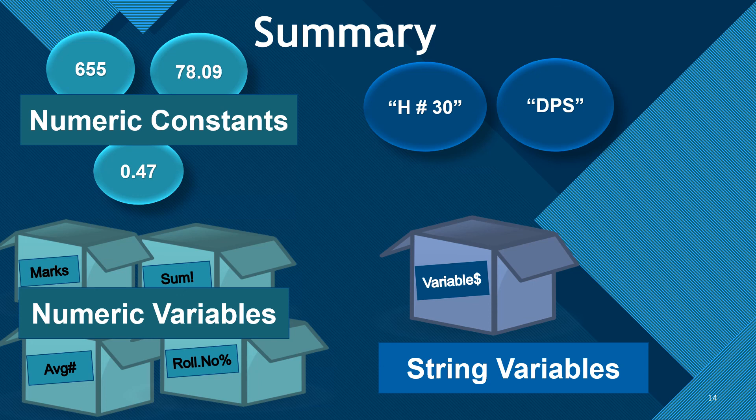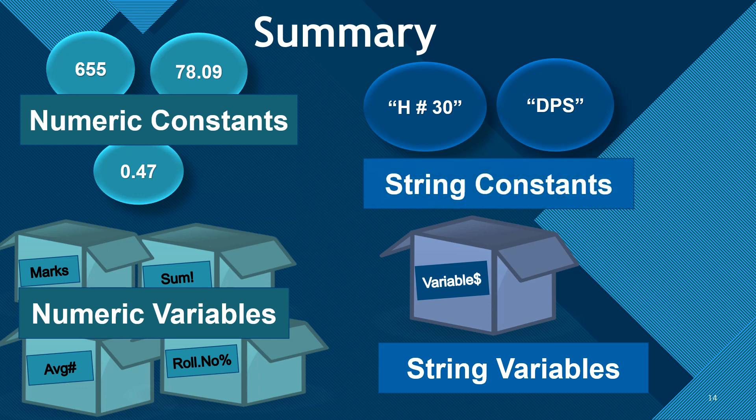The text written in double quotes is called a string constant, or simply a string — it can store only text written in double quotes.